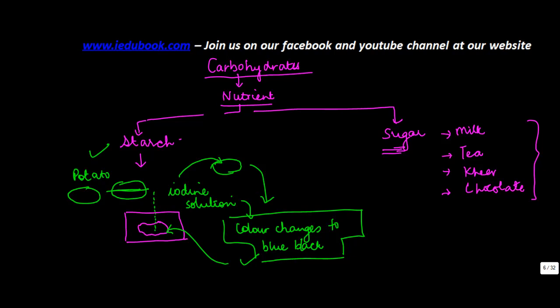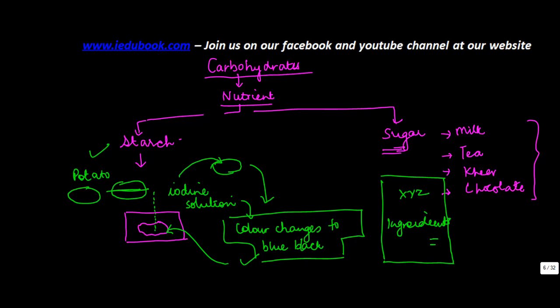Another way to check is by reading the list of ingredients on any packaged product — it will tell you the starch quantity, the sugar quantity, and so on. So next time you buy something from the market, check what the ingredients of that food item are.